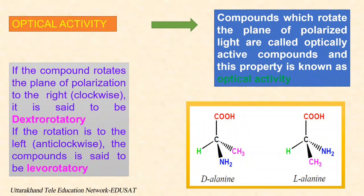The rotation angles can be measured using a polarimeter. For a pair of enantiomers with the same concentration under the same conditions, they rotate the plane of polarization by the same angle but in opposite directions. One is clockwise and the other is counterclockwise. The enantiomer that rotates the plane of polarization clockwise is said to be dextrorotatory and labeled with the prefix D or positive (+). The enantiomer that rotates counterclockwise is said to be levorotatory and labeled with the prefix L or minus (-).